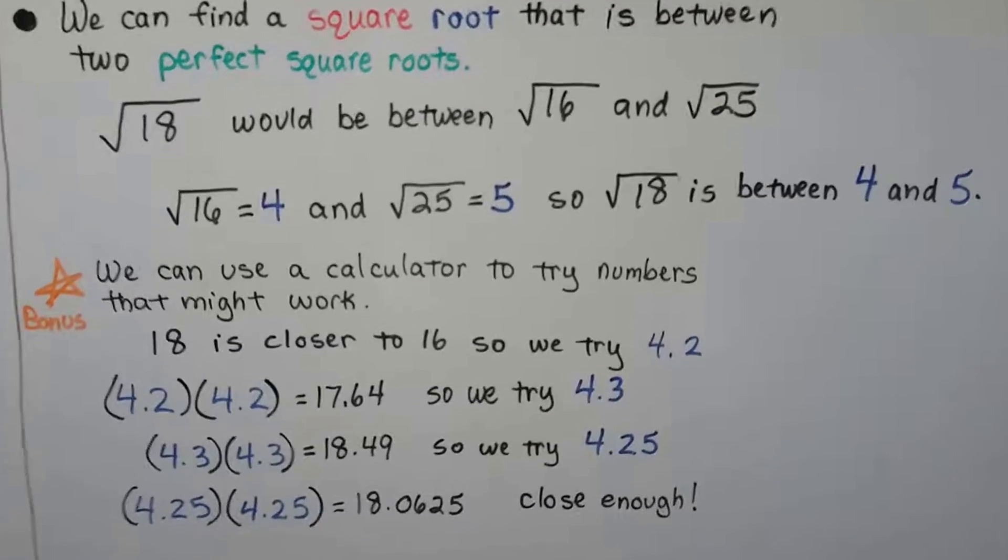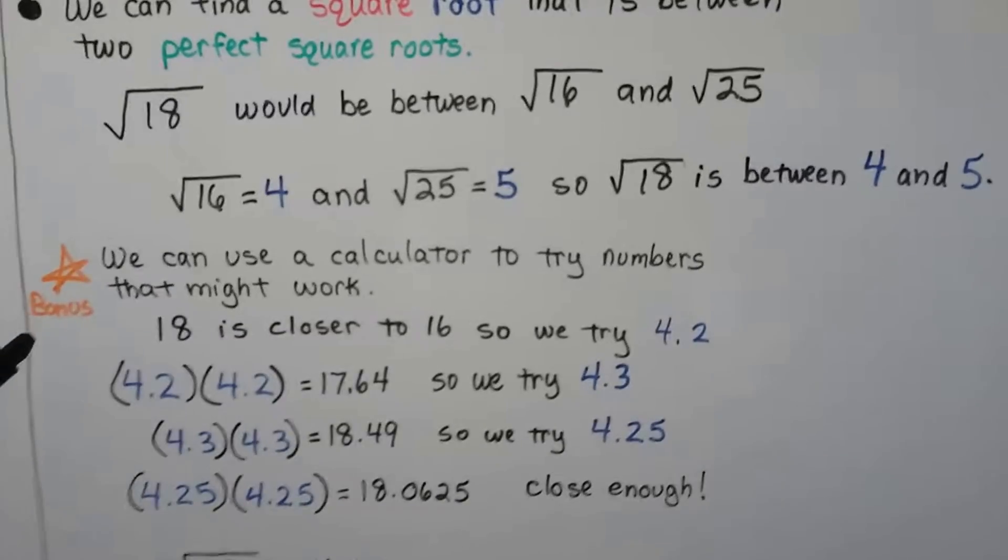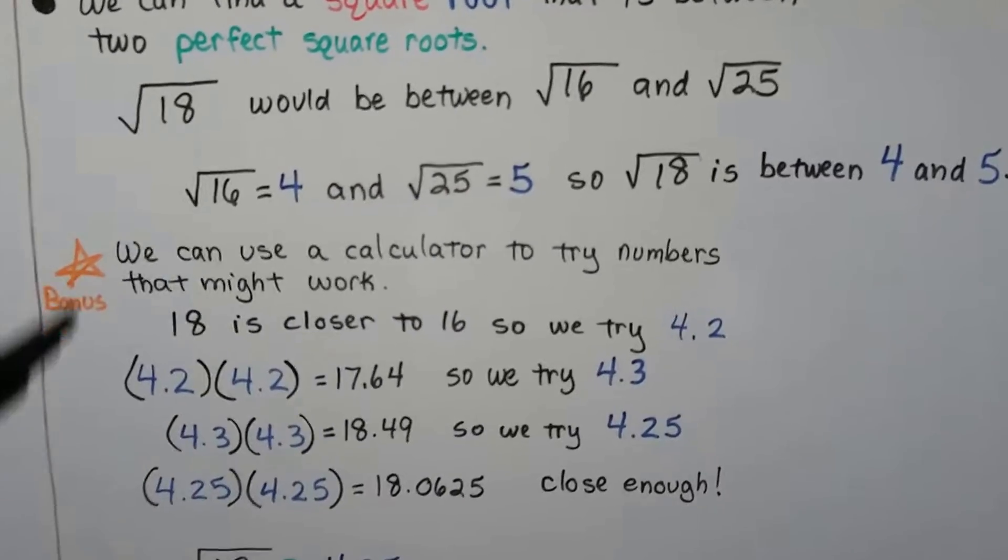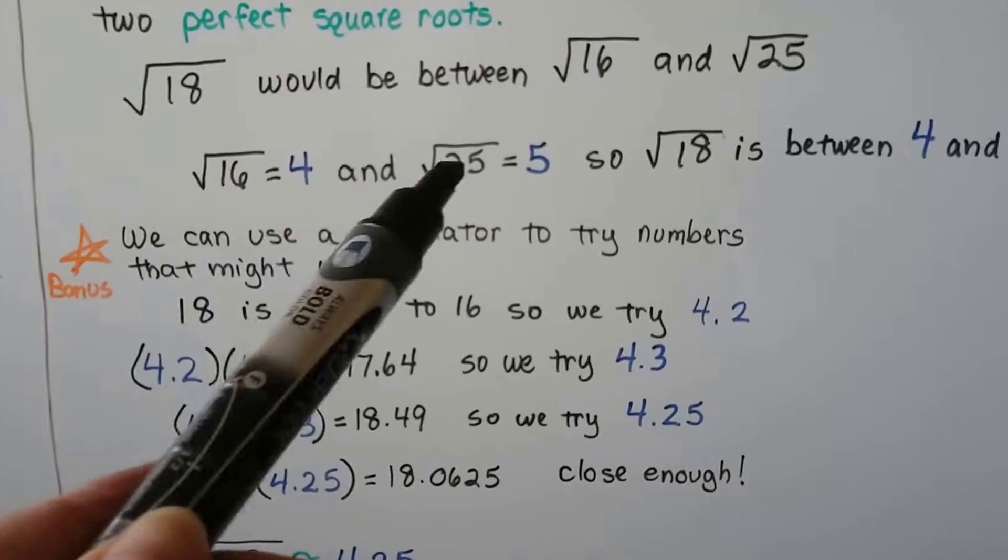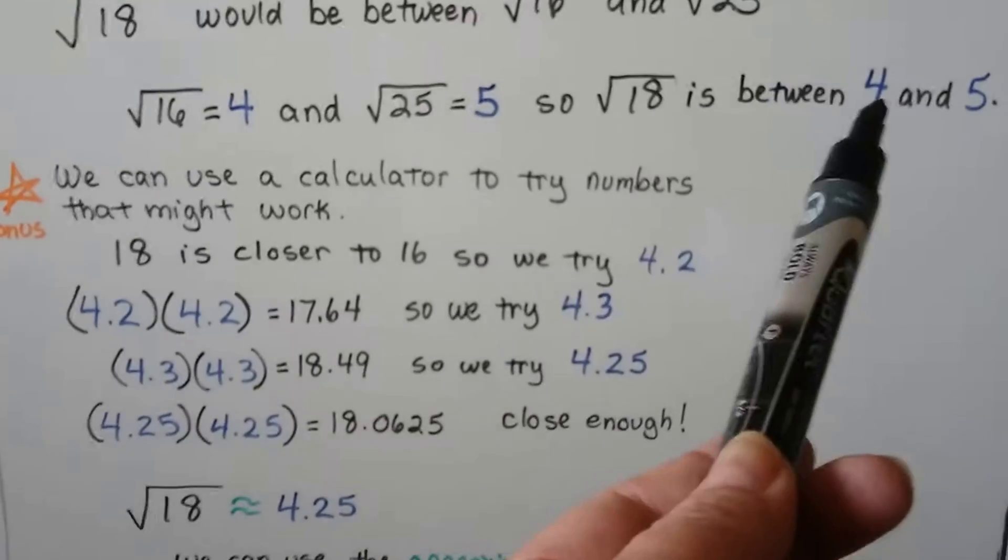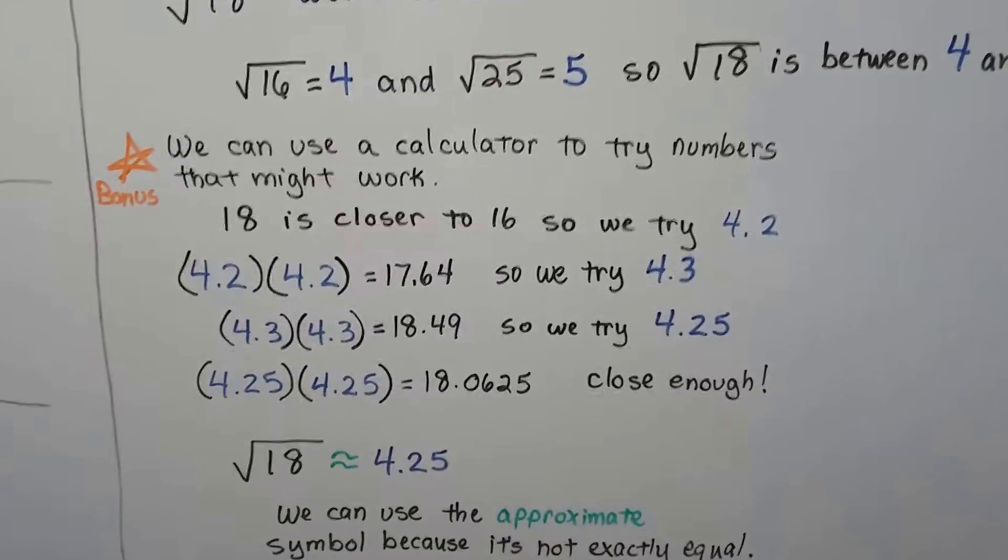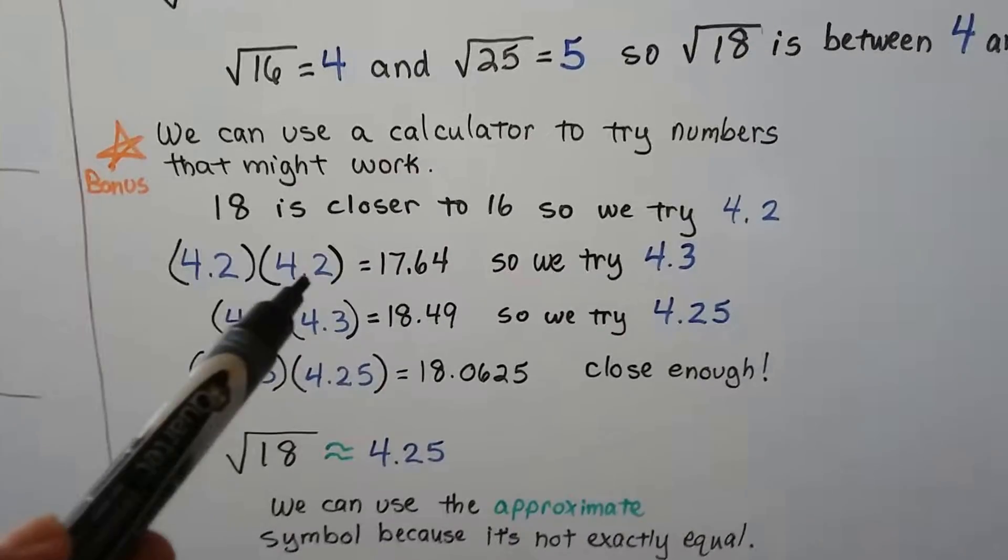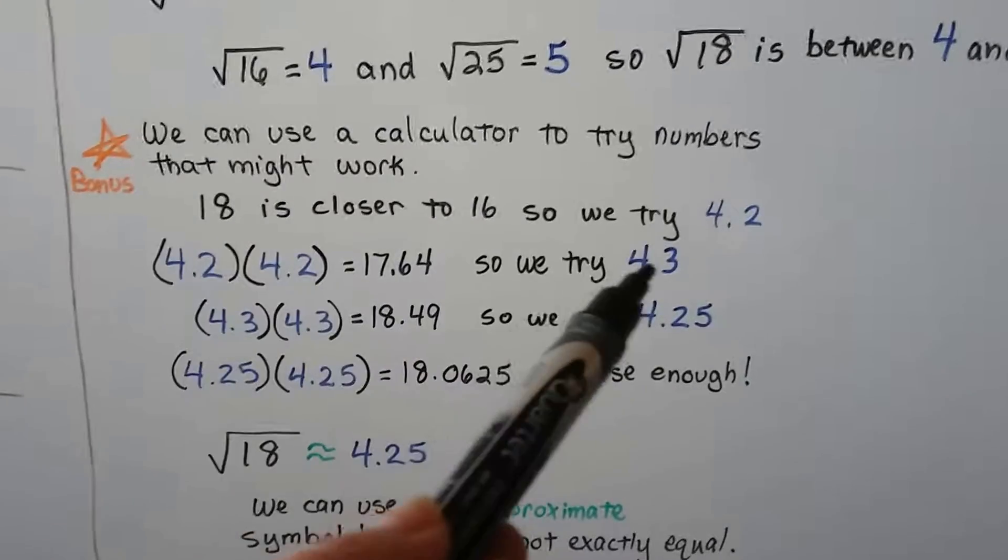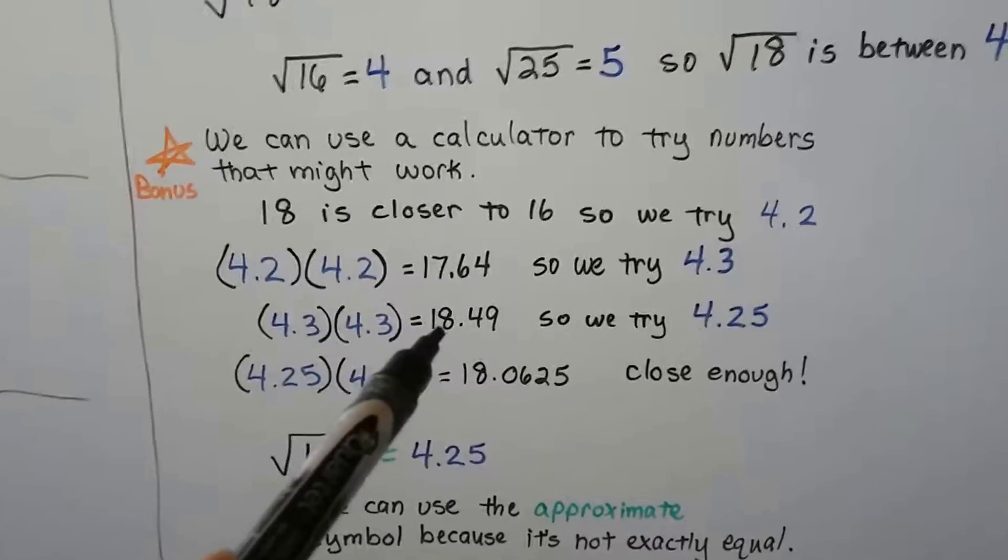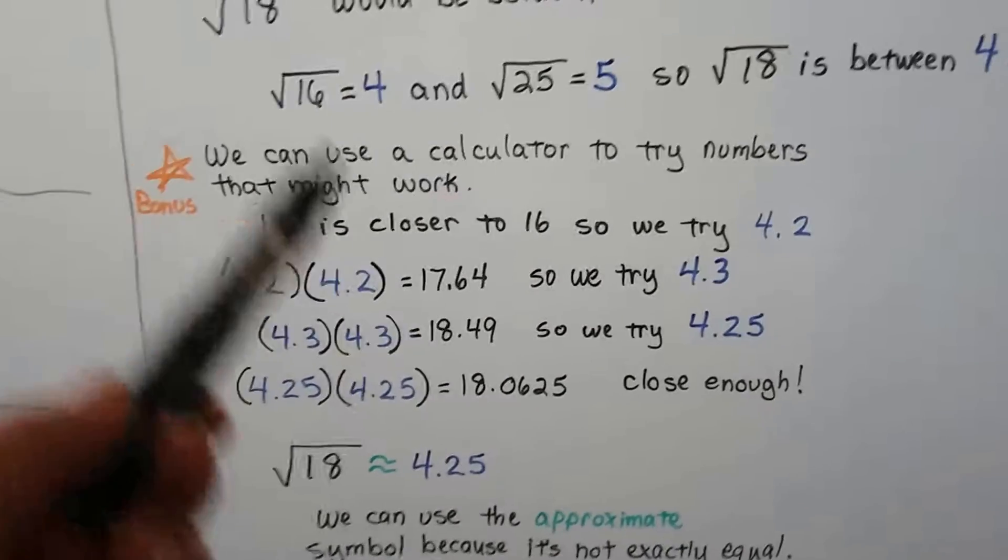So, now here's a bonus. We can use a calculator, or just multiplication, to try to find numbers that would work to be the square root of 18. It's closer to the 16. 18 is closer to 16 than it is to 25. So, if it's between 4 and 5, we can pick a decimal number like 4.2 to see if 4.2 times 4.2 equals 18. Well, not quite. It's 17.64. So, let's try a little bit bigger one, 4.3. Oh, that got too big. 4.3 times 4.3 is 18.49. So, now we're over 18.